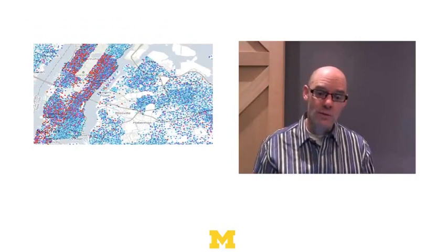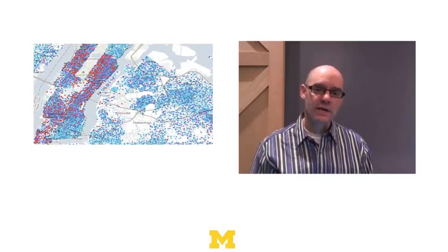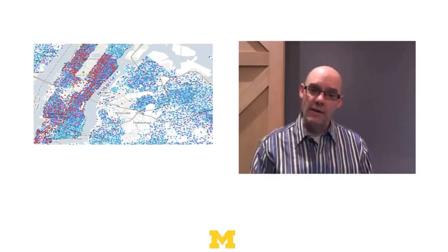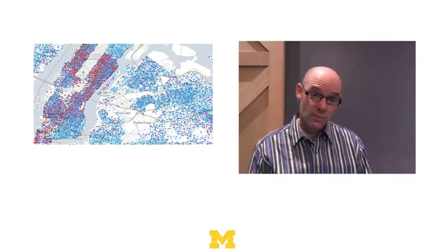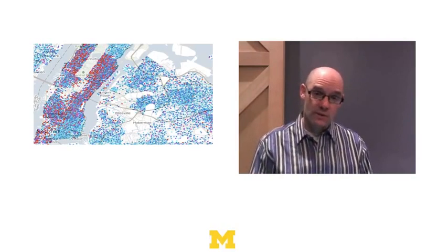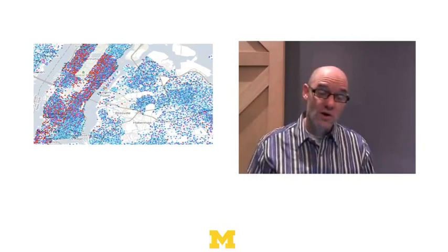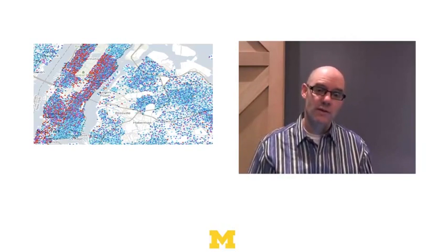The same is true if you look by income. Here's again a picture of New York City. Each red dot represents someone who's very wealthy, each light blue dot represents someone who's poor, and the moderately blue dots represent people in the middle class. If you look at this picture, what you see is segregation by income — fairly stark, not as stark as the racial segregation, but pretty stark.